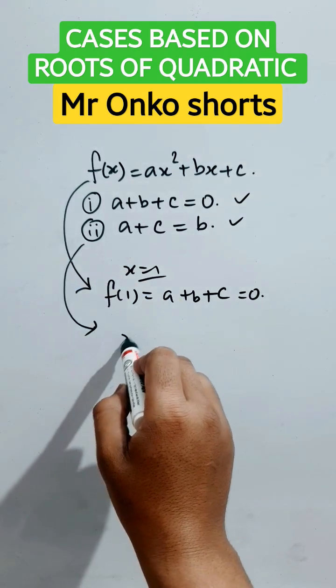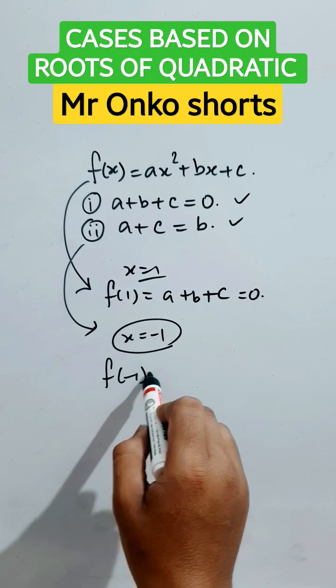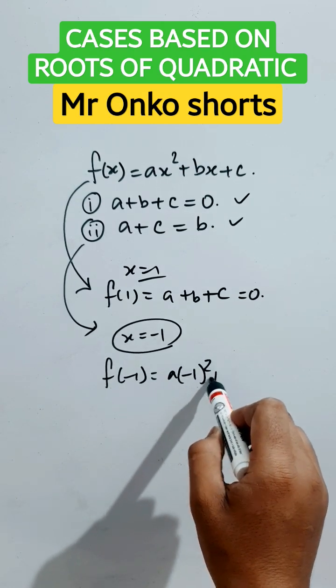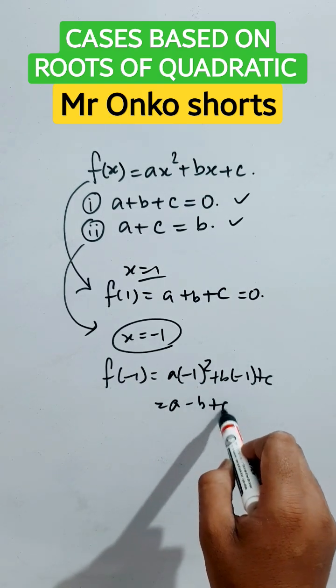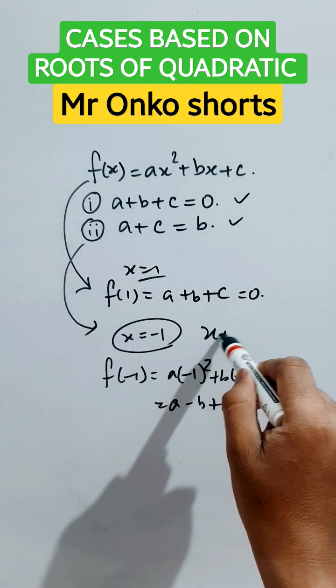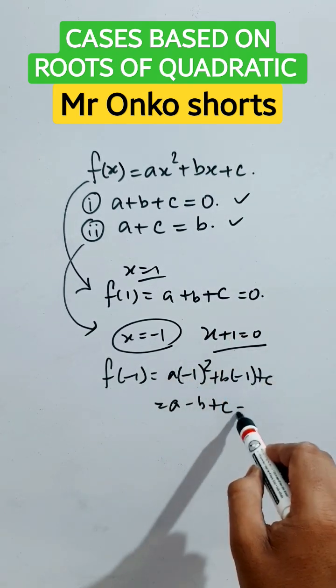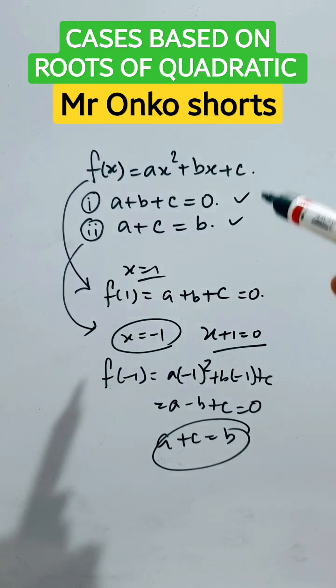Now, for the second case, if we put x equals to minus one, then we will get f of minus one is equals to a into minus one whole squared plus b into minus one plus c, that is a minus b plus c. If x equals to minus one is a root, then x plus one will be equals to zero. So, this will be equals to zero. So, a plus c is equals to b. These two are the cases when these two arise.